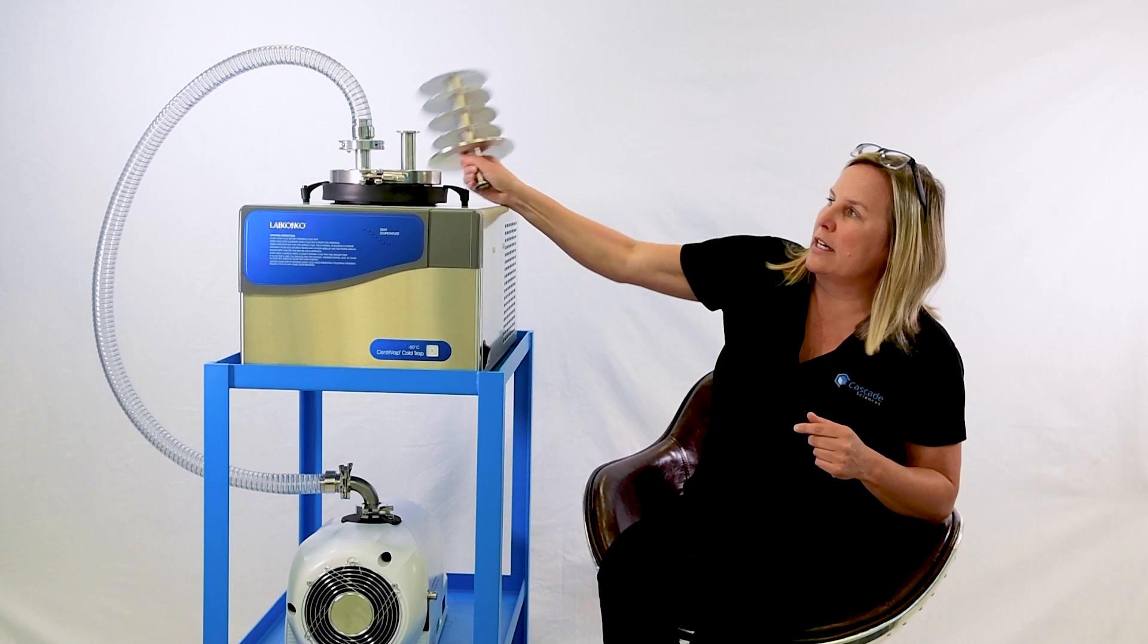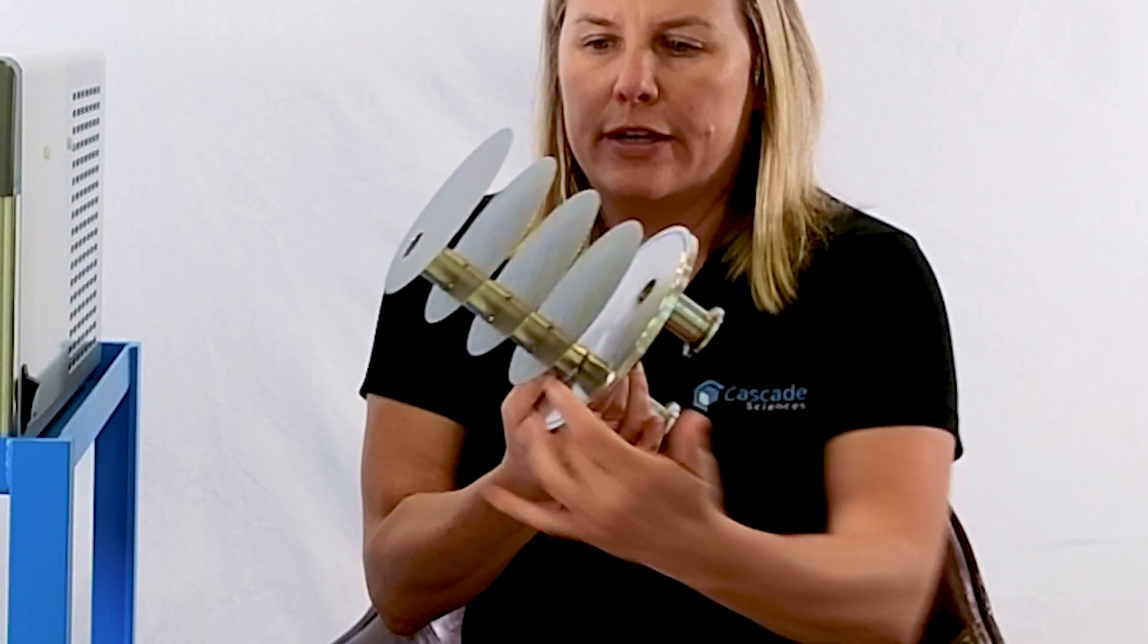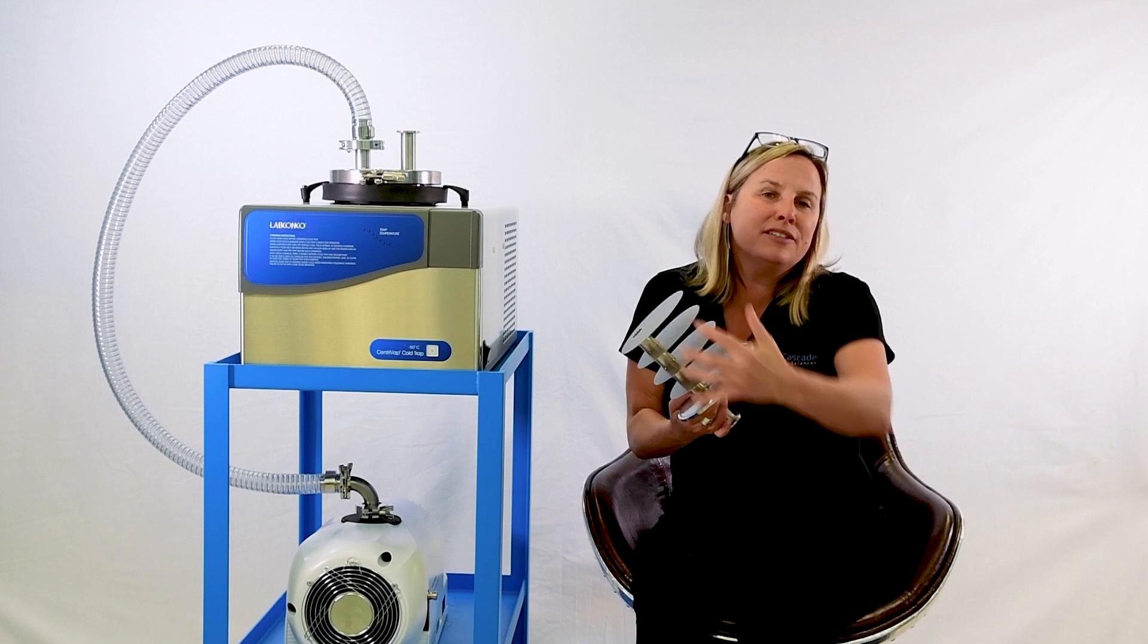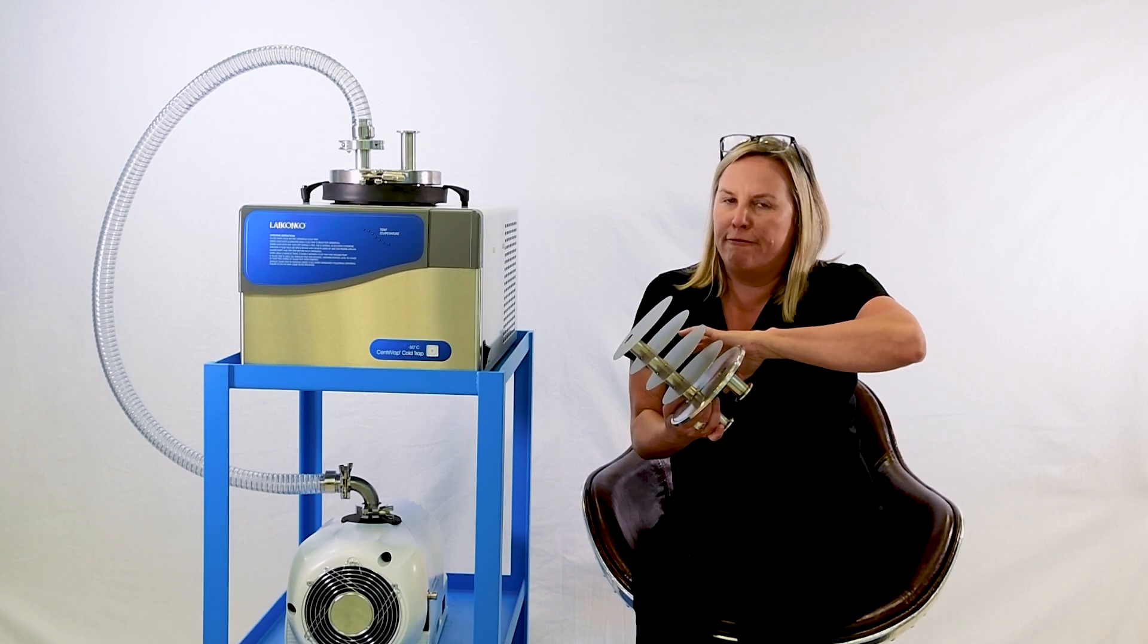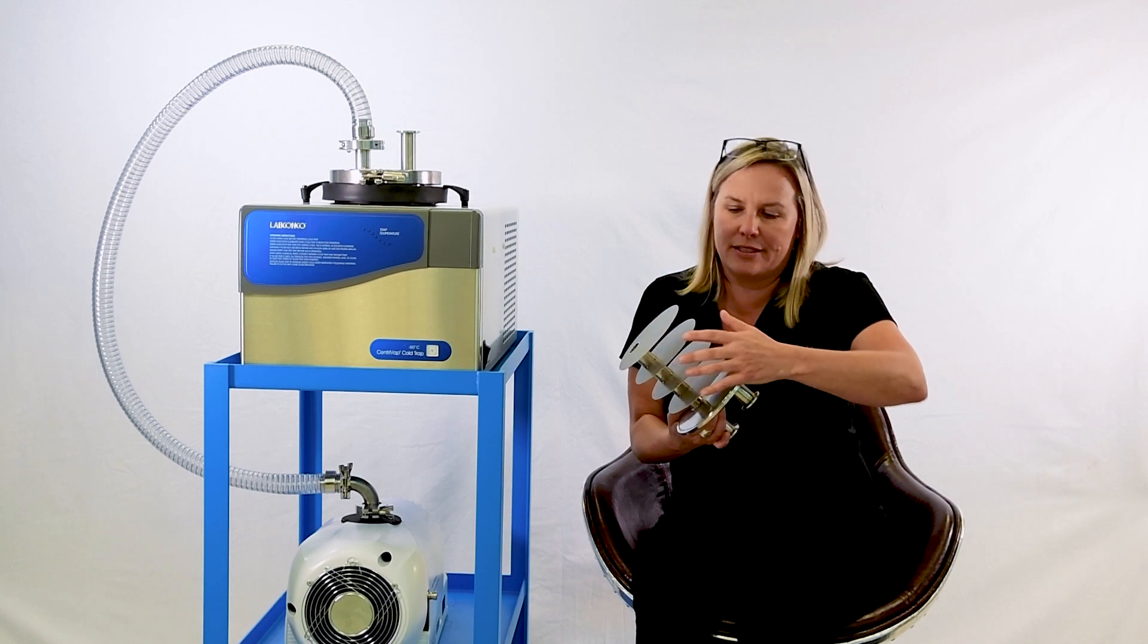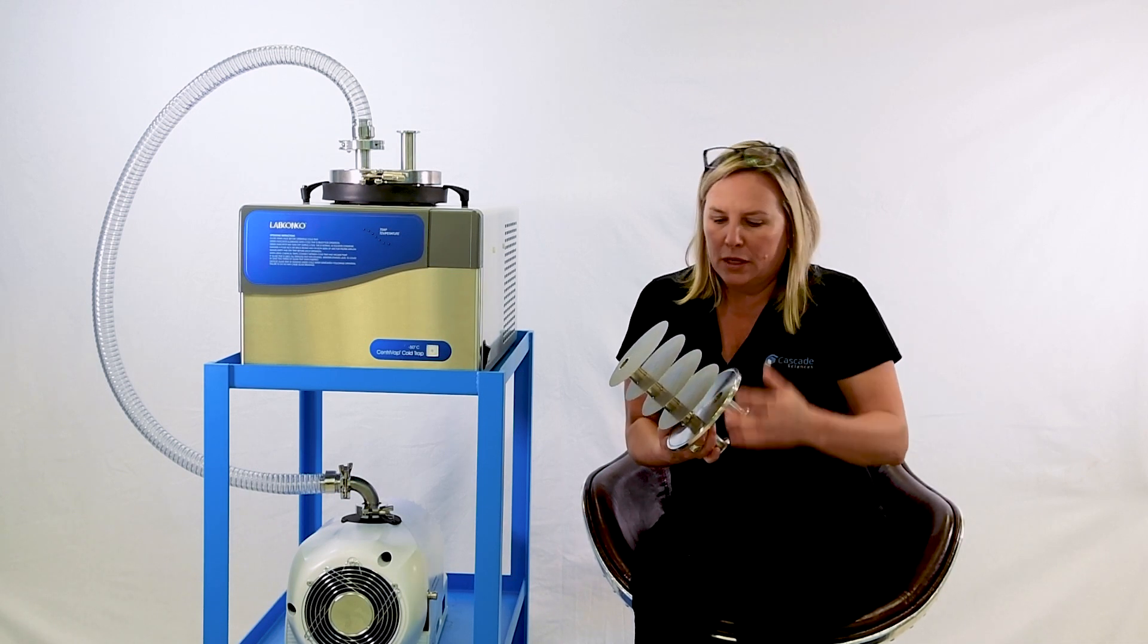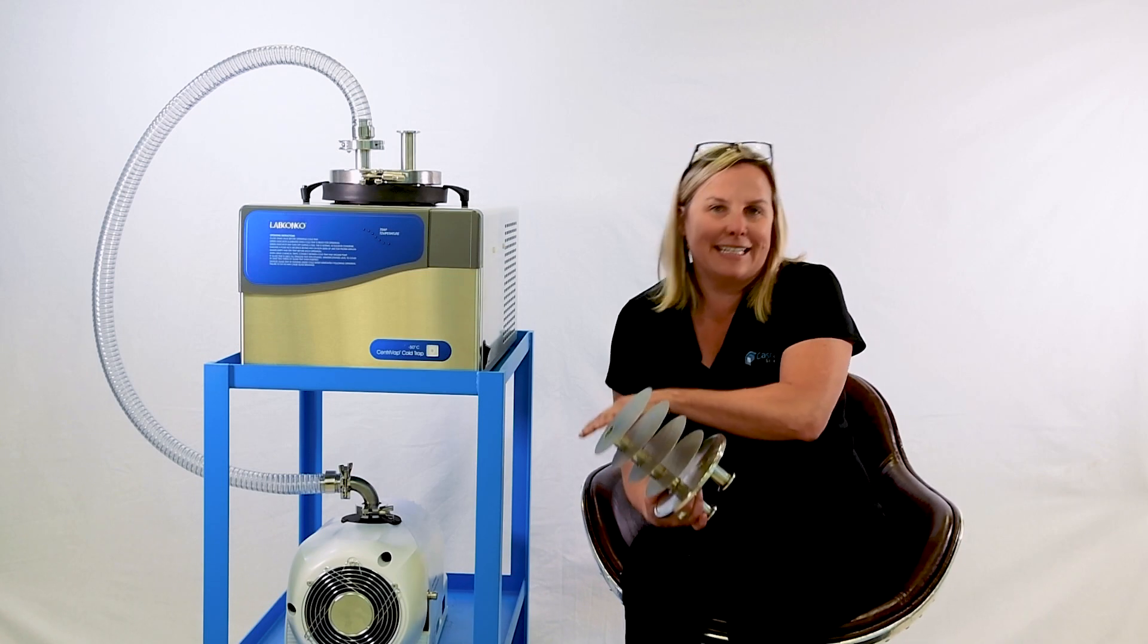The second thing we've done is that inside the cold well, we have a very long cold finger, and then these baffles that you see provide tons of surface area. This gives the trap a very high capacity, high efficiency rate of trapping. So lots of room for things to get stuck in the trap and not inside of your pump.